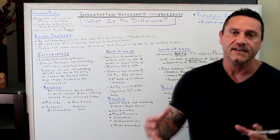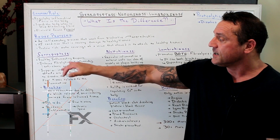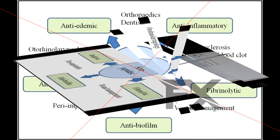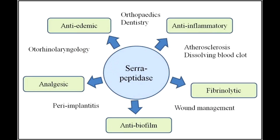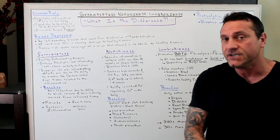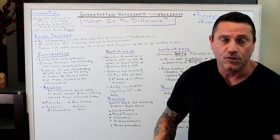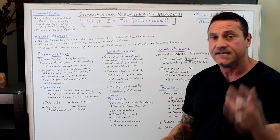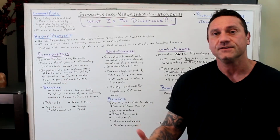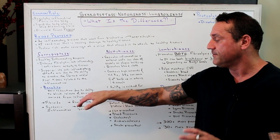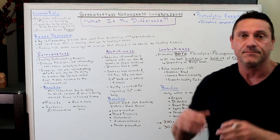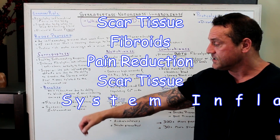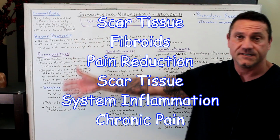Serrapeptase is great for a healthy inflammatory response. It induces fibrinolytic, anti-inflammatory, and anti-edemic activity in tissues, which helps dissolve scar tissues related to inflammation like uterine fibroids and blocked fallopian tubes. Its anti-inflammatory effects come from its ability to dissolve fibrous or scar tissue due to inflammation. A key benefit is pain reduction — it blocks the release of pain-inducing amines from inflamed tissue. It's phenomenal for fibroids, scar tissue, systemic inflammation, and chronic pain. Dosage varies according to condition.